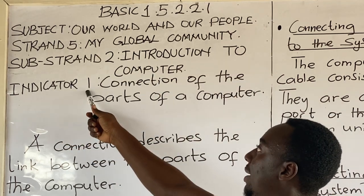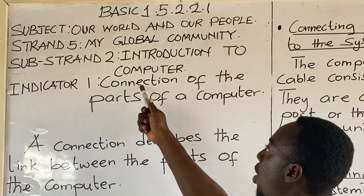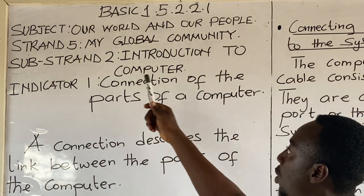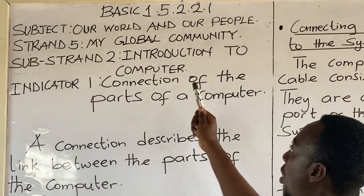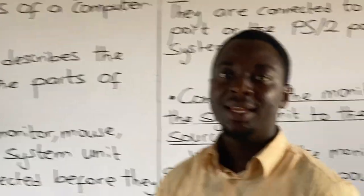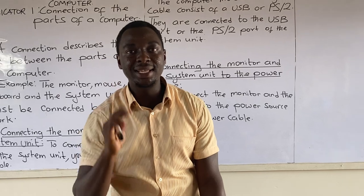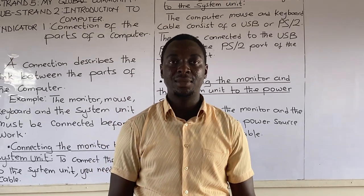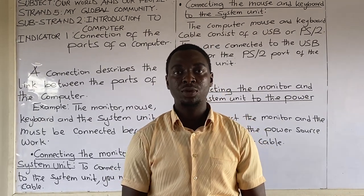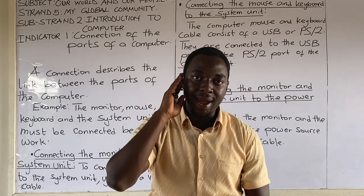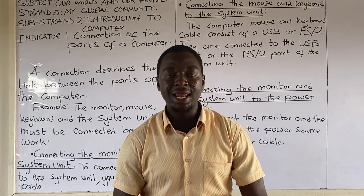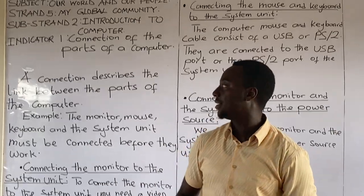Indicator 1: Connection of the Parts of a Computer. The key word in our indicator is Connection. What is Connection about? When you hear the word Connection, what comes into your mind? Let's look at the meaning of Connection.